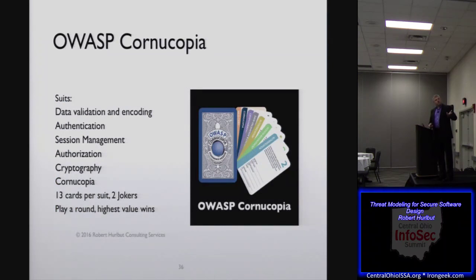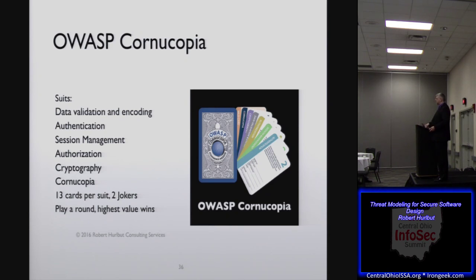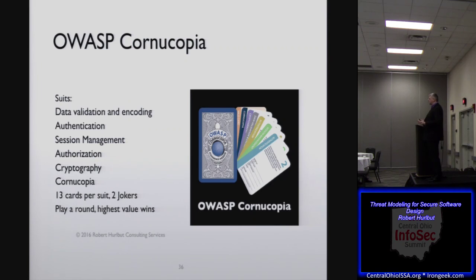There's also OWASP Cornucopia, which is a game that focuses on a few areas. It's a game you can play with your team — everybody gets about five or six cards, you have your diagram out there, and someone picks a card and says, this is a two of authorization, they read it and say, does that apply to this situation? Yes, put it down. Somebody says, I'll meet your two of authorization with a five of authorization — and whoever puts down the highest hand wins. You can cheat — it's a game, it's a fun game — but it's a way of learning about this as well.